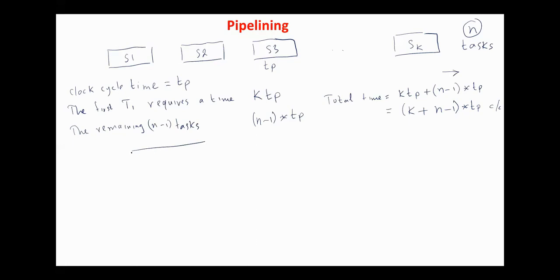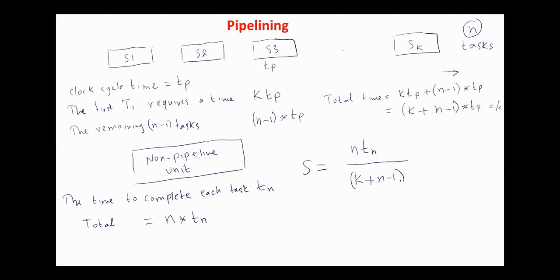Now consider a non-pipeline unit to perform the same operation. Assume that the time to complete each task is Tn, then the total time to complete all the tasks in a non-pipeline unit equals N multiplied by Tn. The speed up ratio can be calculated as NTn over K plus N minus 1 multiplied by Tb. You see here, as N increases, this value can be considered as N. In this case, the speed up ratio equals NTn over NTb, which is Tn over Tb.